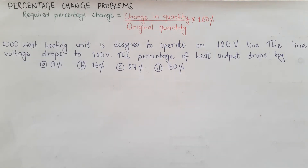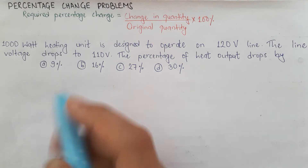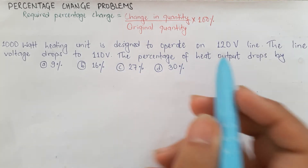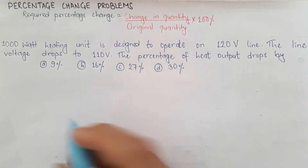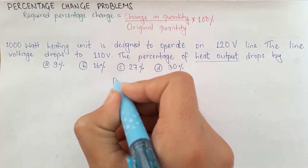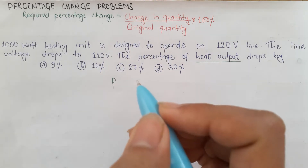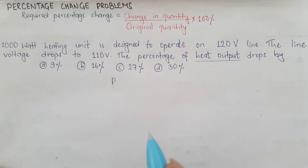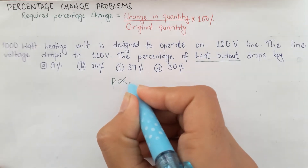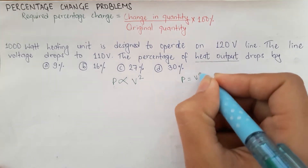Let's take one example. A 1000-watt heating unit is designed to operate on a 120-volt line. The line voltage drops to 110 volts. What is the percentage by which heat output drops? Heat output means power is required, and power is directly proportional to V², as per the formula P = V²/R.